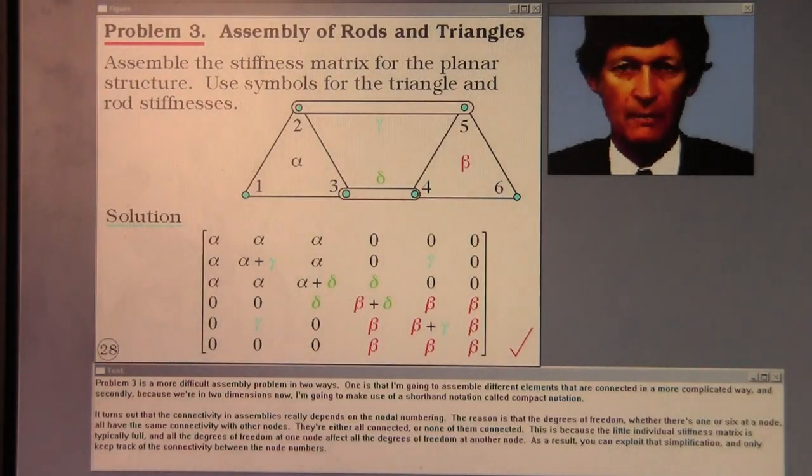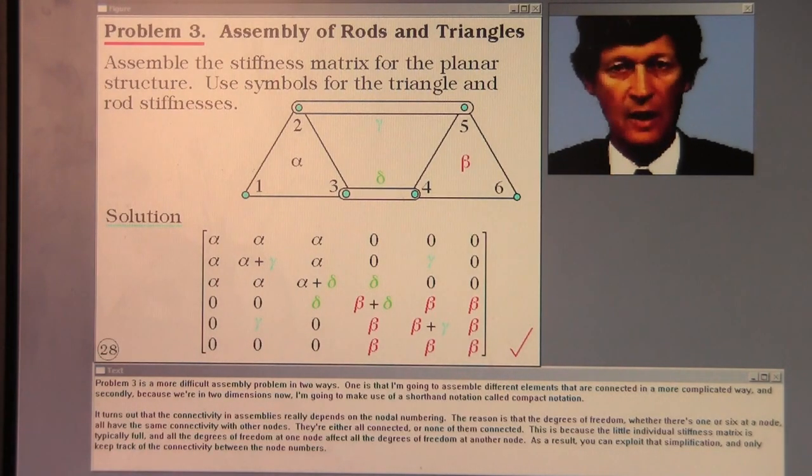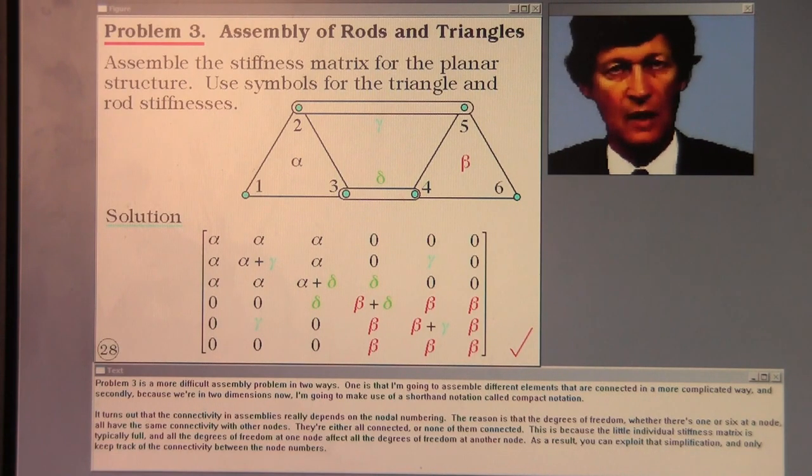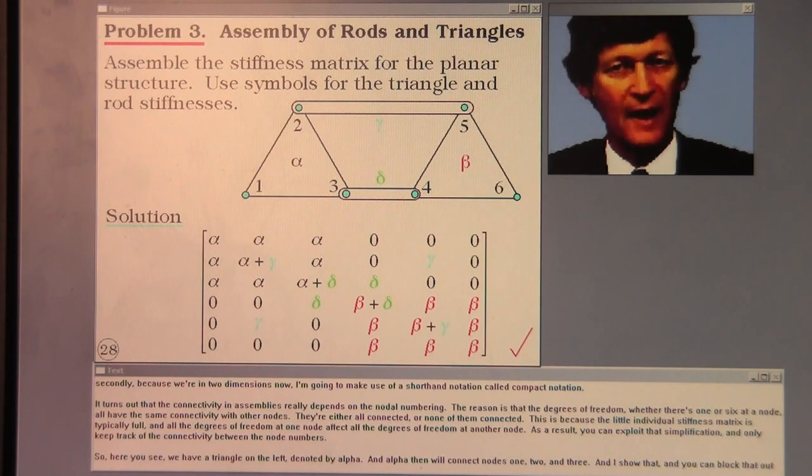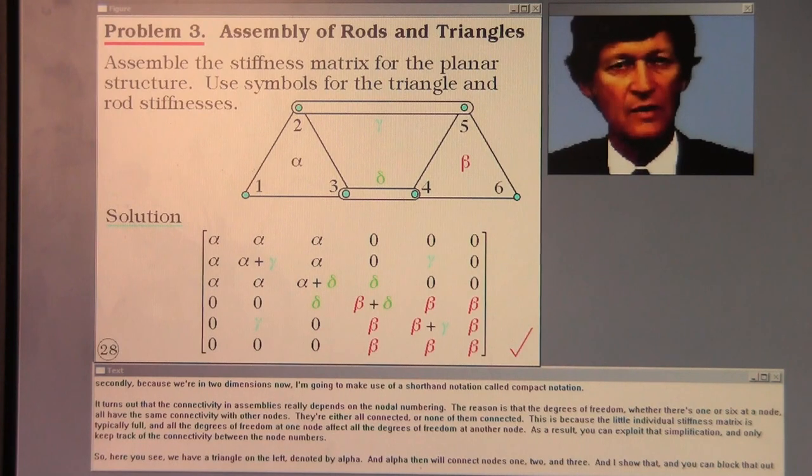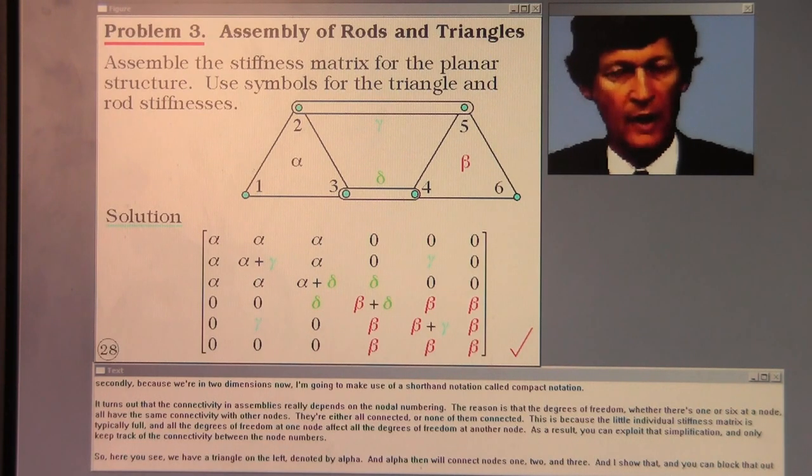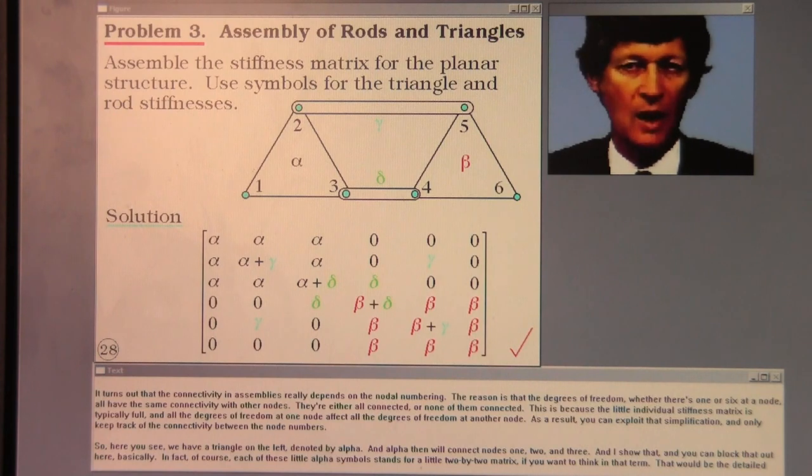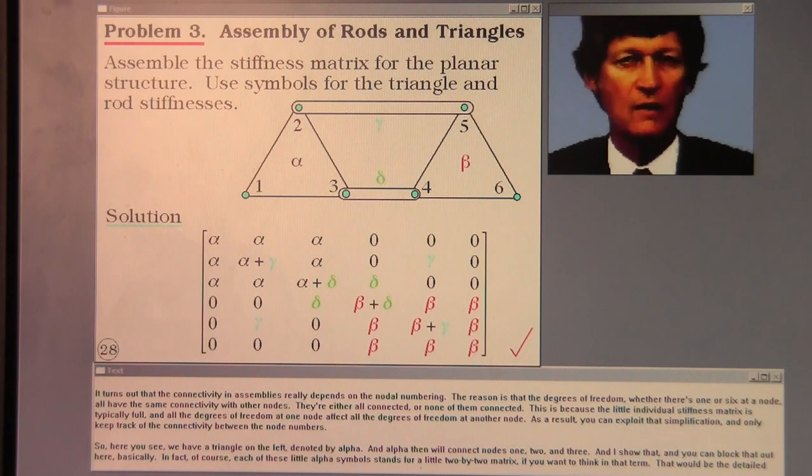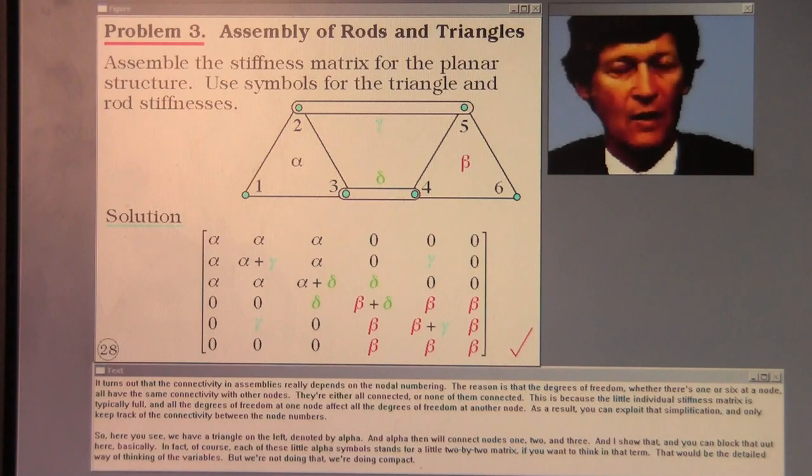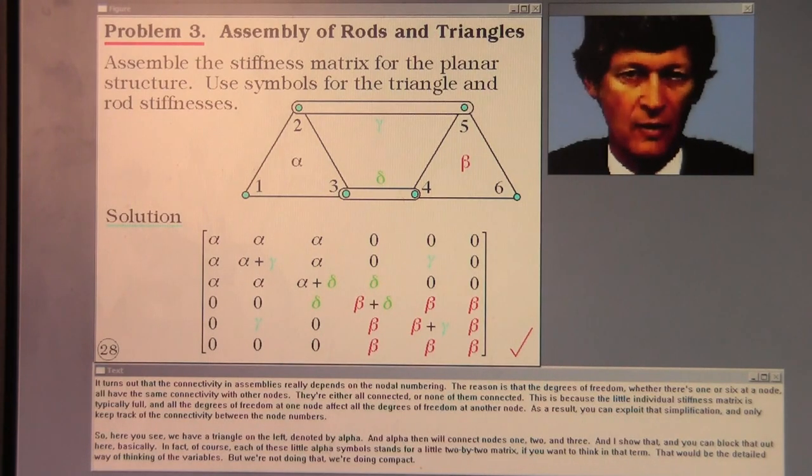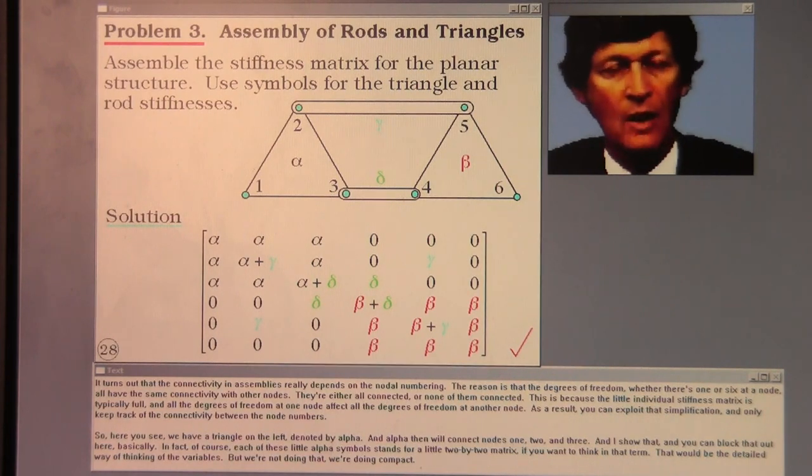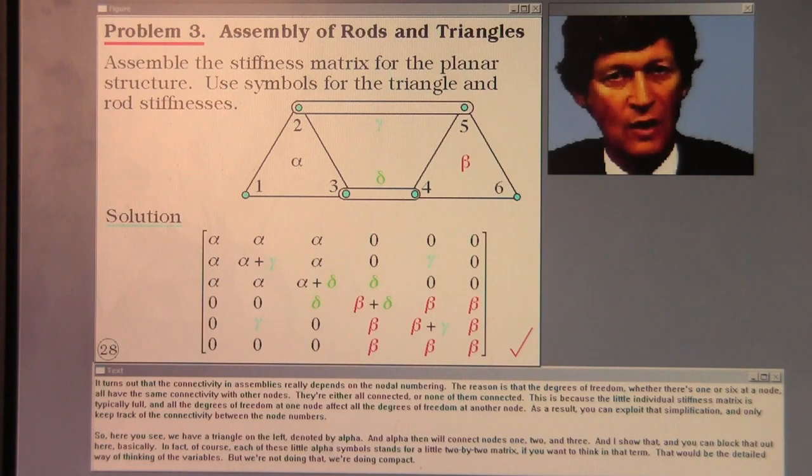Problem three is a more difficult assembly problem in two ways. One is that I'm going to assemble different elements that are connected in a more complicated way. And secondly, because we're in two dimensions now, I'm going to make use of a shorthand notation called compact notation. It turns out that the connectivity in assemblies really depends on the nodal numbering. The reason is that the degrees of freedom, whether there's one or six at a node, all have the same connectivity with other nodes. They're either all connected or they're none of them connected. This is because a little individual stiffness matrix is typically full, and all the degrees of freedom at one node affect all the degrees of freedom at another node. As a result, you can exploit that simplification and only keep track of the connectivity between the node numbers.